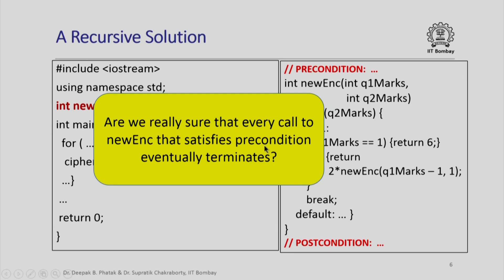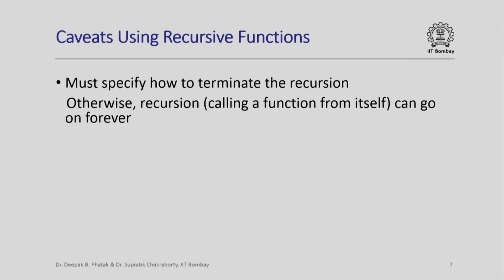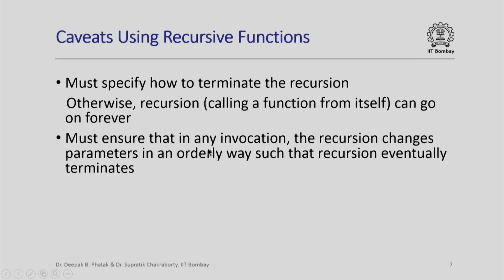When we deal with recursive programs, we have to be able to answer such questions. There are certain caveats you must be aware of when using recursive functions. First, you must specify how to terminate the recursion, otherwise the function calling itself can go on forever. Second, when you invoke a recursive function and call that same function again within it, you must be changing the parameters — if you do not change the parameters, this will be an infinite recursion. And when you do change the parameters, you must change them in an orderly way that guarantees the recursion eventually terminates by reaching the termination condition.